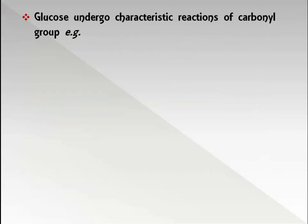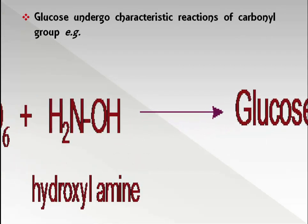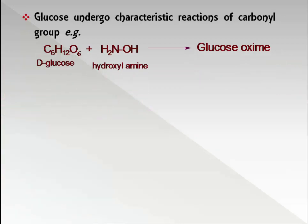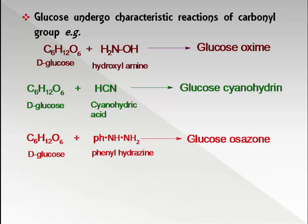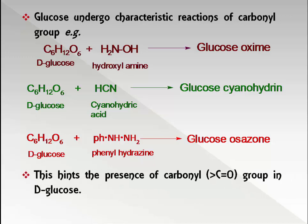Glucose undergoes characteristic reactions of a carbonyl group. Glucose reacts with hydroxylamine to form glucose oxime. Glucose reacts with cyanohydric acid to form glucose cyanohydrin. These reactions hint at the presence of a carbonyl group in D-glucose.